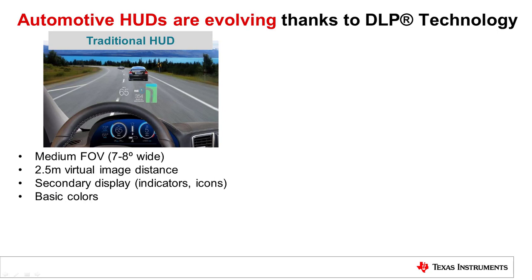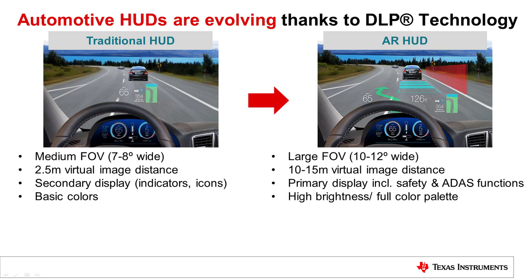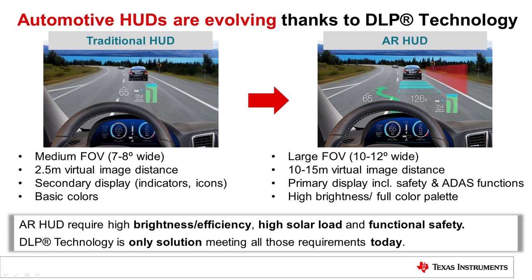As head-up displays grow in popularity and market share, the size of the displayed image also grows. Moving to augmented reality head-up displays, or AR HUDs, display sizes can exceed 15 degrees field of view, or FOV. While this increased FOV allows displays covering more of the road in front of the driver, it also presents several challenges. One main challenge with AR HUDs is physical volume, with the largest systems approaching 20 liters of space.